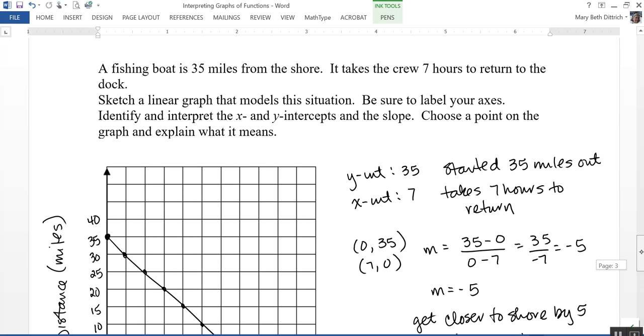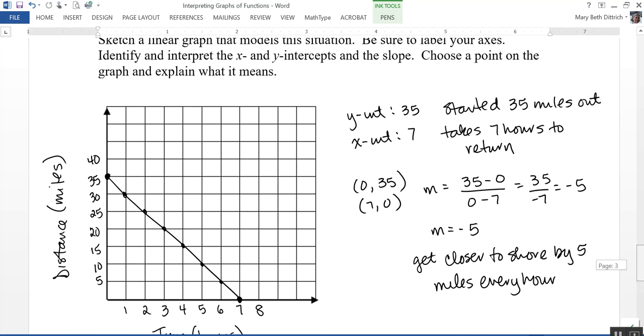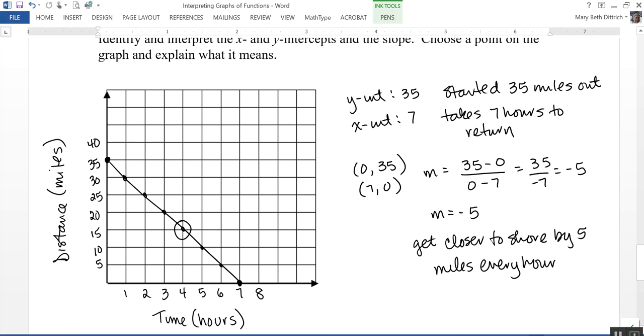Are there any other questions? Did I get everything there? Choose a point on the graph and explain what it means. So let's choose any point. Let's choose this point right here. So that's the point, 4 comma 15. And what does that mean? It means that after 4 hours, they are 15 miles from shore.